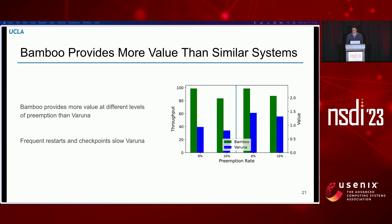We compared against an existing system called Varuna, which also uses pipeline parallelism and does checkpointing to provide resilience. We ran both systems on real traces of preemptions collected from the cloud, recreating the series of preemptions and additions for a direct comparison. Varuna frequently had to stop and restart since checkpointing requires a restart for every single failure encountered. At both rates of preemption tested, Bamboo was able to provide both higher throughput and higher value.